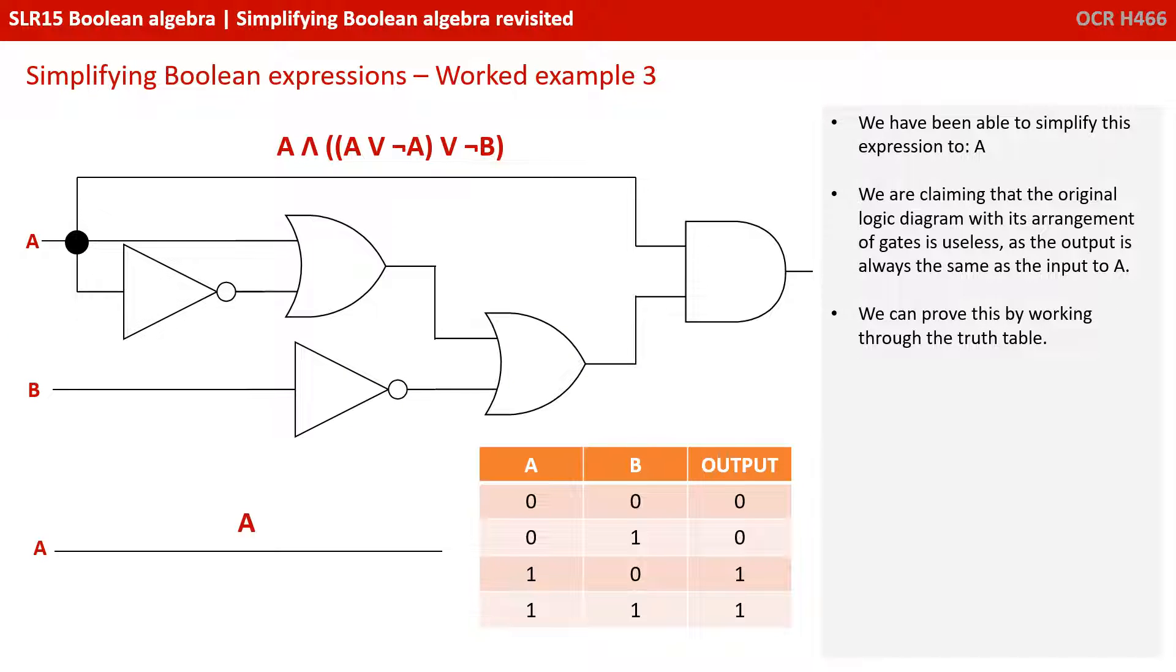So look, we've been able to simplify this expression to just A. We're claiming the original logic diagram with its arrangements of gates is essentially useless as the output is always the same as whatever the input to A is. And we can prove this by working through the truth table.